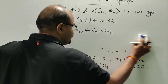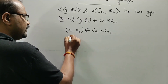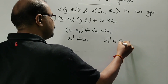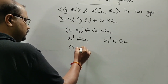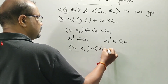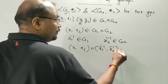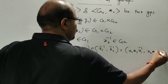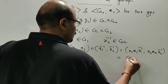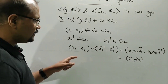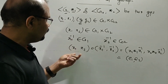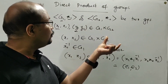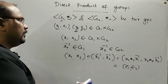For inverse: since G1 and G2 are groups, x1 inverse belongs to G1 and x2 inverse belongs to G2. We have (x1, x2) dot (x1 inverse, x2 inverse) equals (x1 star1 x1 inverse, x2 star2 x2 inverse) equals (e1, e2). Therefore (x1, x2) inverse equals (x1 inverse, x2 inverse). So G1 cross G2 is a group — the direct product.